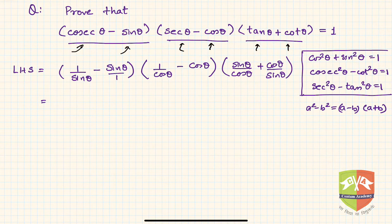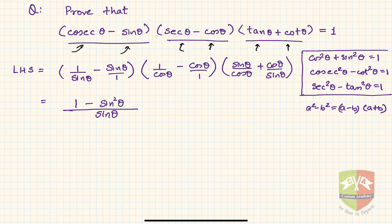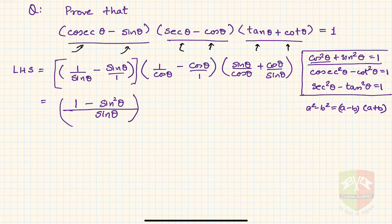Taking the LCM, the denominator of the first factor is sine theta, so the numerator becomes 1 minus sine squared theta. When you see the form 1 over sine theta minus sine theta, it should come to mind that after reducing you get 1 minus sine squared, which equals cos squared.